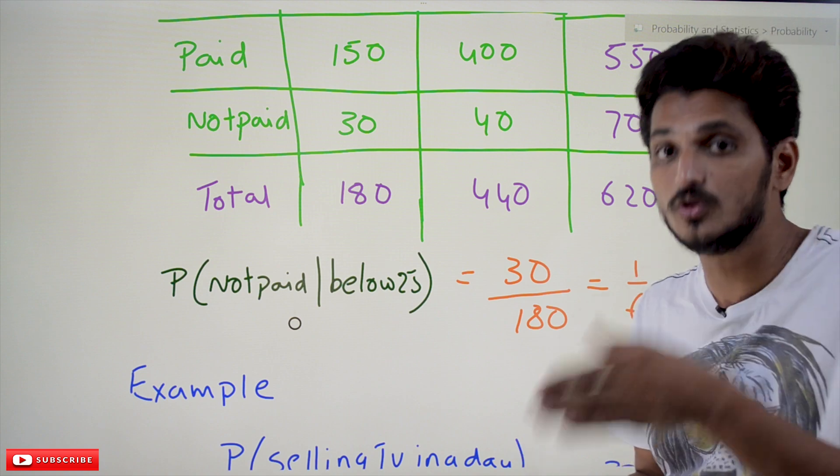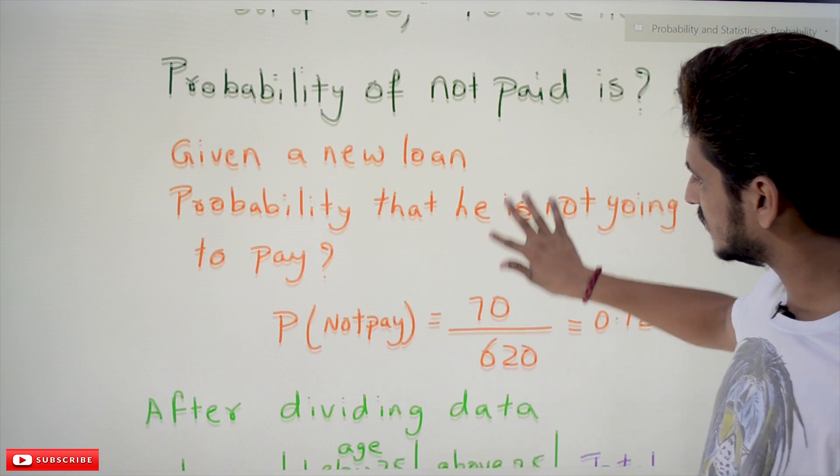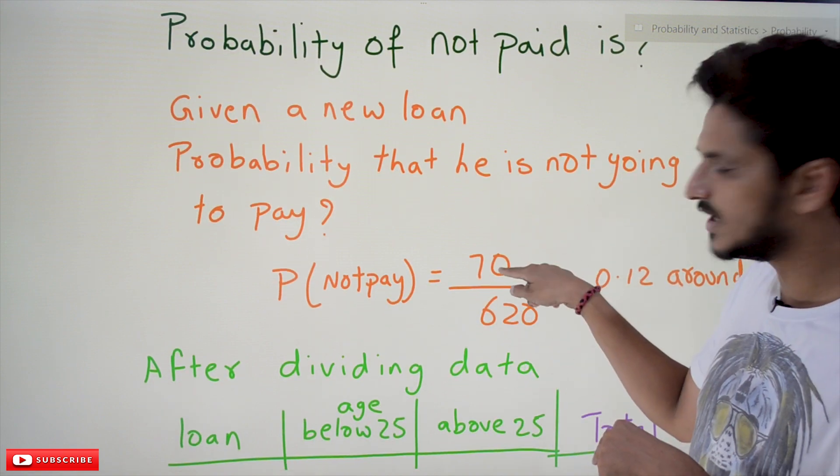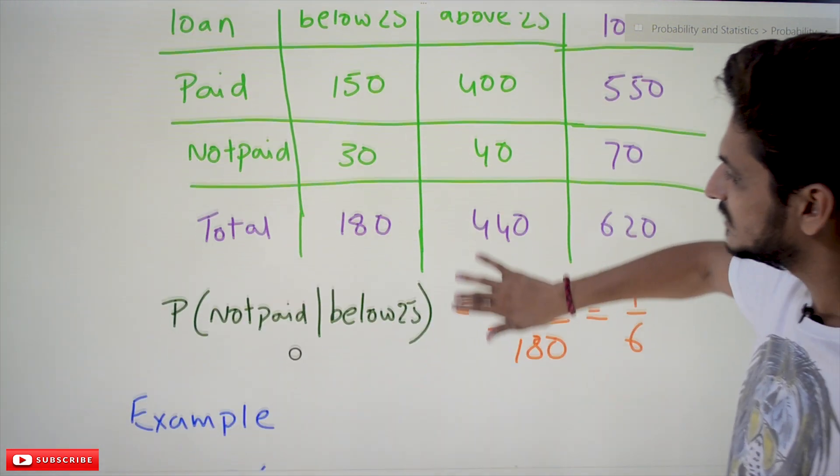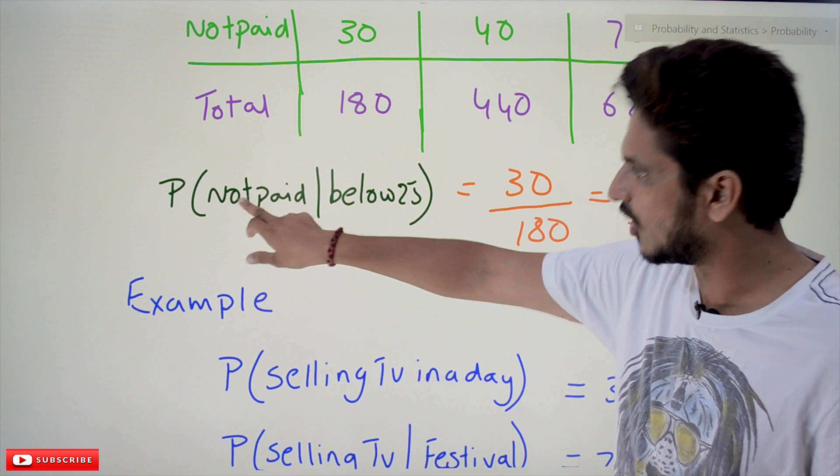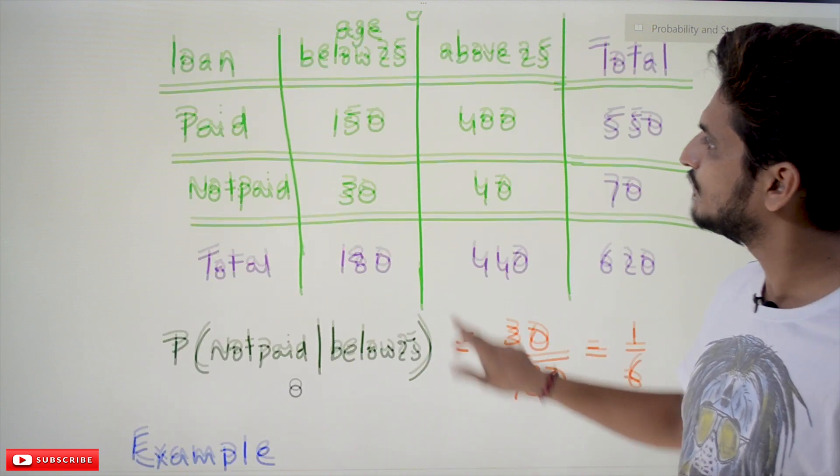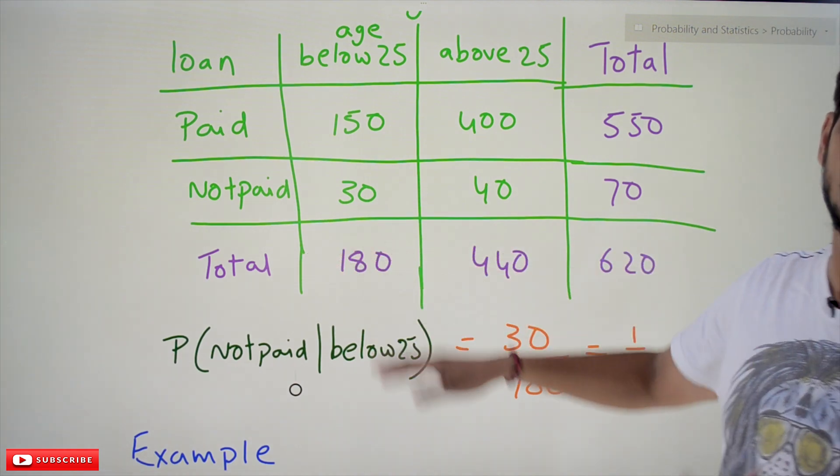In the first example when we take this example, what's our sample space? 620 applications. Out of that, how many are not paid? 70. Whenever the condition is given - not paid, below 25 - our sample space changes. Our sample space is 180 now. From the past data, 180 loans has been issued to age below 25.